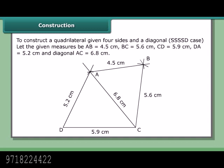Constructing a quadrilateral given four sides and a diagonal — the SSSSD case. Let the given measures be AB = 4.5 cm, BC = 5.6 cm, CD = 5.9 cm, DA = 5.2 cm, and diagonal AC = 6.8 cm. The two triangles we can construct to complete the quadrilateral are triangle ADC and triangle ABC.